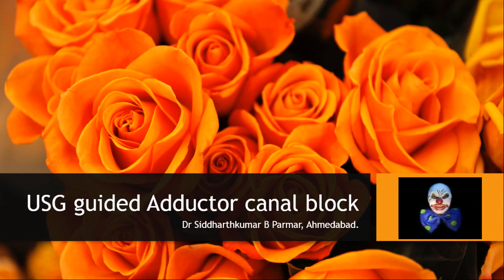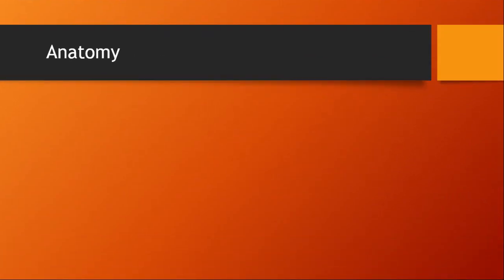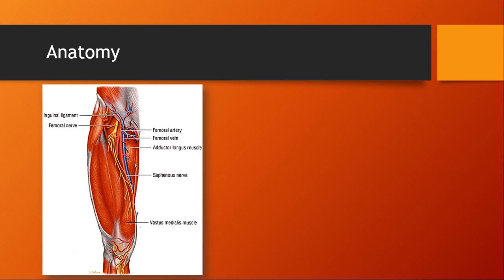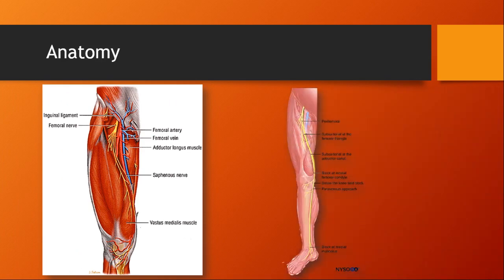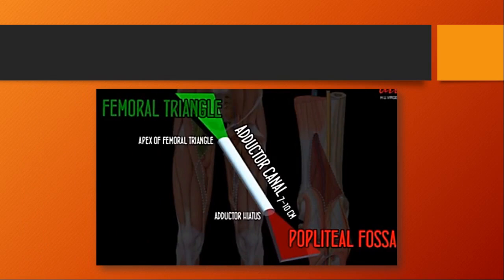Hello, my name is Siddharth and today I am going to talk about ultrasound-guided adductor canal block. It is basically a motor-sparing block targeting the femoral nerve after most of the motor branches to the quadriceps have already exited. The femoral nerve passes through the femoral canal, lying beneath the sartorius muscle, entering an aponeurotic intermuscular tunnel in the middle third of the medial side of the thigh, called the sub-sartorial canal, adductor canal, or Hunter's canal. The canal length is 7 to 10 centimeters, between the femoral triangle and popliteal fossa.